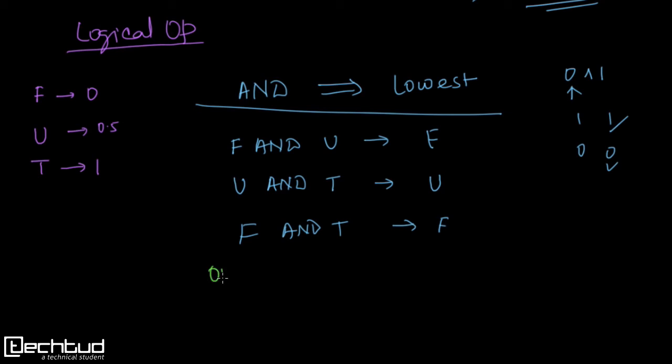In case of OR operator what we take is highest. So think of this: when we have 0 or 1 we take highest of it, so our output is 1. Similarly when we have false or unknown the output is unknown. When we have unknown or true the output is highest, that is true.